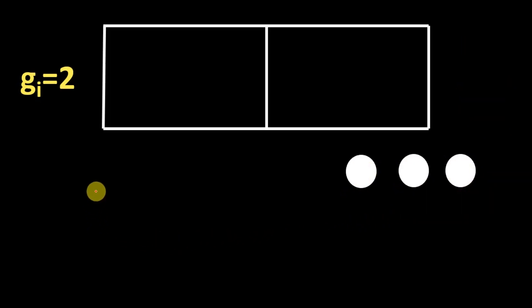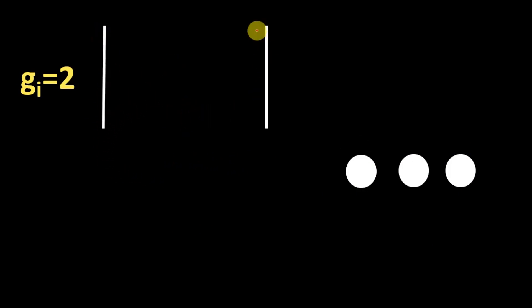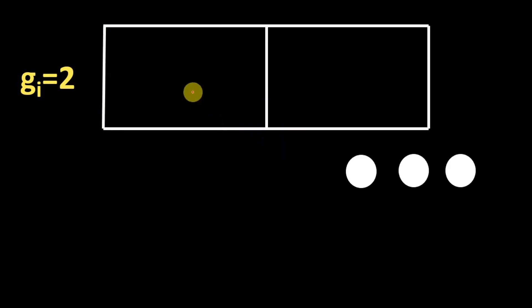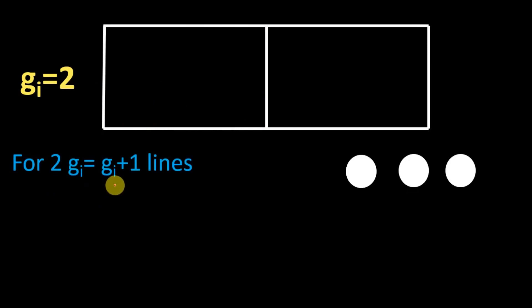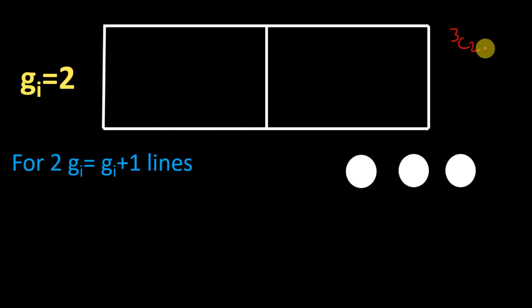The second thing we need to understand is how many lines are needed to create degenerate energy levels. If we have one line, we have no energy level. If we have two lines, we have one energy level. If we have three lines, we have two energy levels. So to create Gi levels, we need Gi plus one lines. If we want to create Gi levels, we need Gi plus one lines.